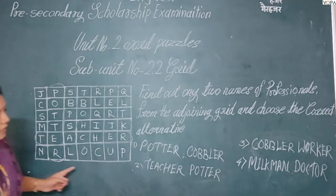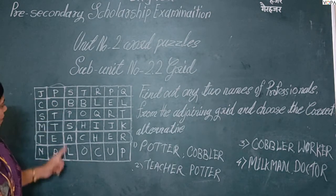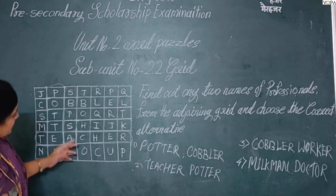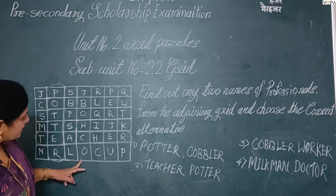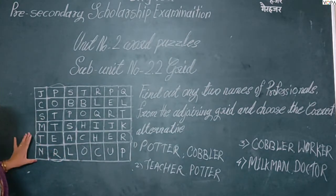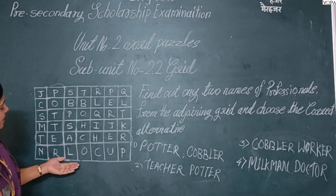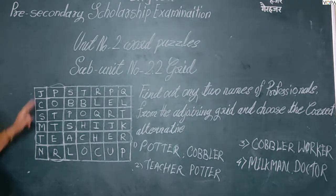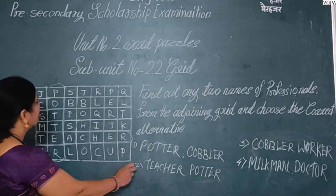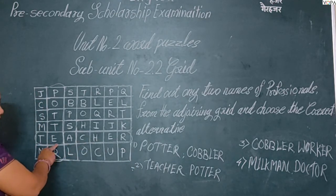The third option, potter and workers — the word 'worker' doesn't appear in the grid. The fourth option, milkman and doctor — that also doesn't appear here. So the correct option is the second one: teacher and potter.